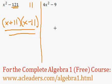Now we have 4x squared minus 9. We open two sets of parentheses and the root of 4x squared.